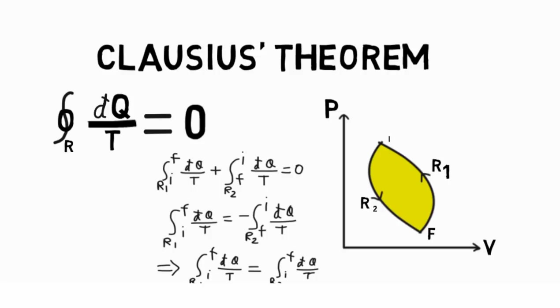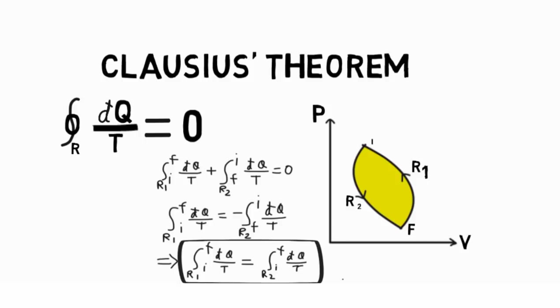Since r2 is a reversible path, we can simply flip the equation while changing the negative sign. Since r1 and r2 represent any two reversible paths, the equation for r is independent of the reversible path connecting i and f.